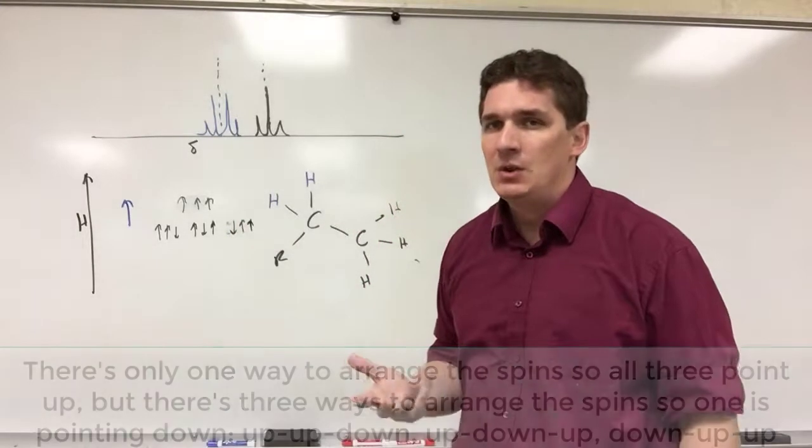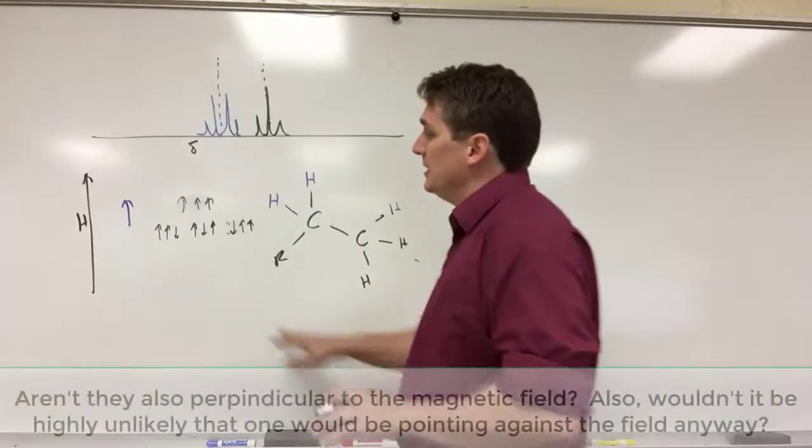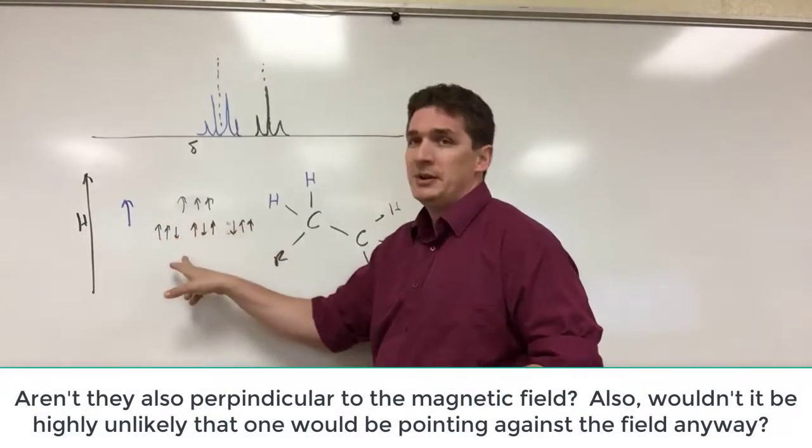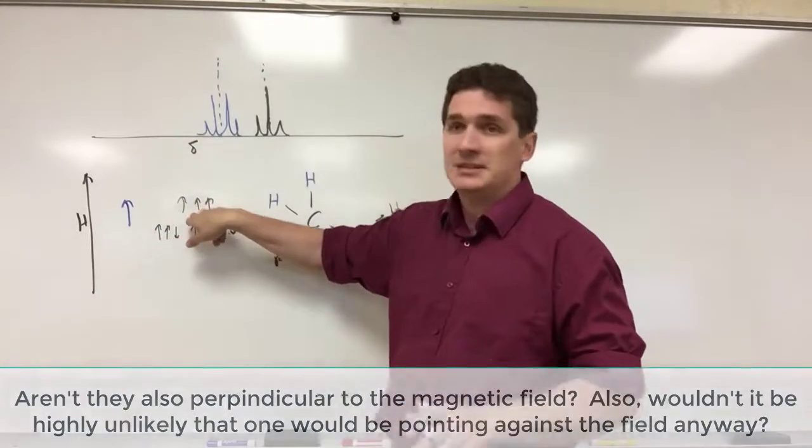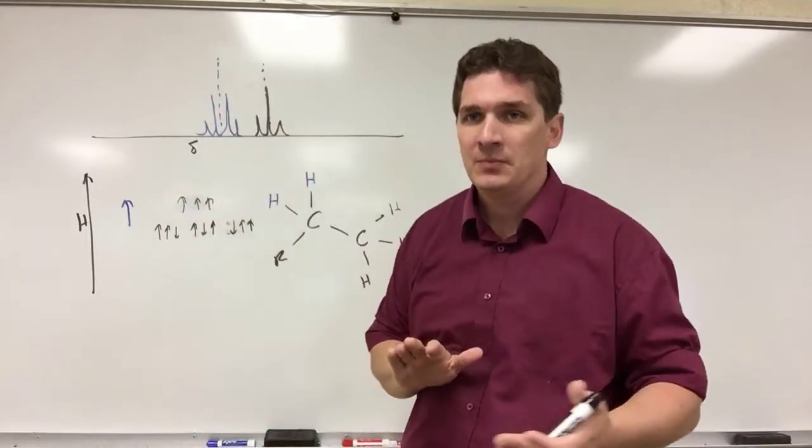Now you may sit back and say, well why would they be pointing down that against the magnetic field? Just take my word for it, this is how we explain it. So in this case we have three different ways to arrange this. Now this is not nearly as stable as this conformation, so that's why we see it slightly shifted, more deshielded.